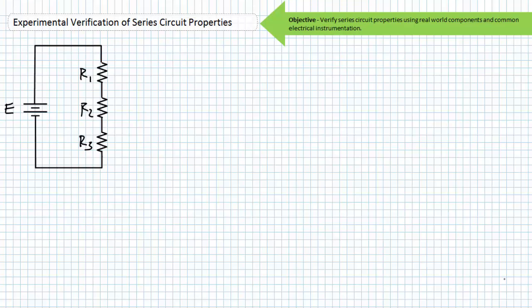Good day and welcome to Big Bad Tech. I'm your instructor Jim Pytel and today's activity is experimental verification of series circuit properties. Our objective is to verify series circuit properties using real-world components and common electrical instrumentation. We'll observe that current anywhere in a series path is the same and use Ohm's law, Kirchhoff's voltage law, and the voltage divider rule to predict observed quantities. We'll also demonstrate the effects of opens and short circuits, and wrap up with a bonus round featuring voltage sources in series.